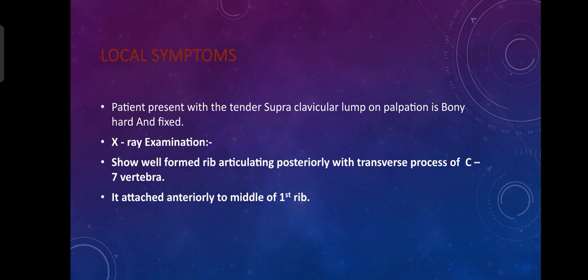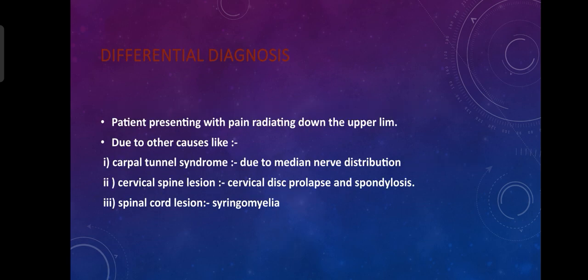In differential diagnosis, we consider other causes of pain radiating down the upper limb, such as carpal tunnel syndrome due to median nerve distribution, cervical spine lesions, cervical disc prolapse and spondylosis, and spinal cord lesions like syringomyelia.